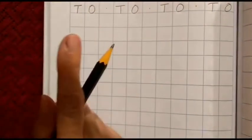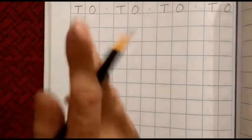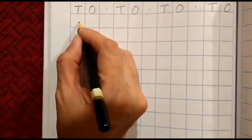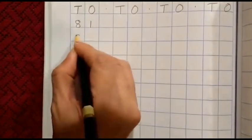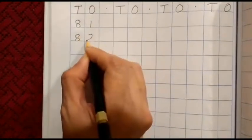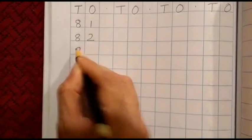One thing, whenever you are writing, you should say the numbers and write the way I am doing here. 8, 1, 81, 8, 2, 82.